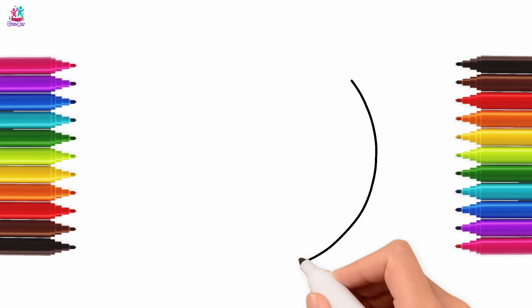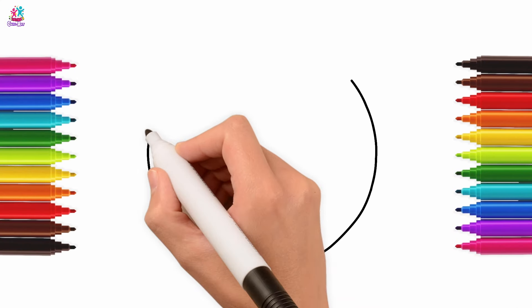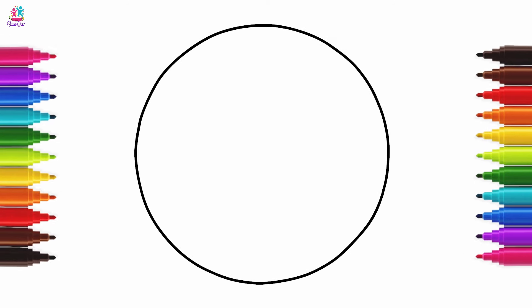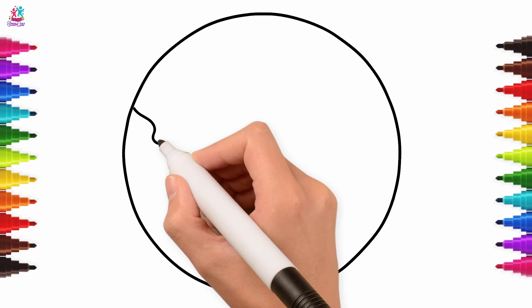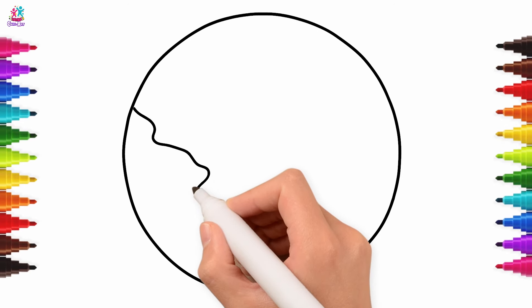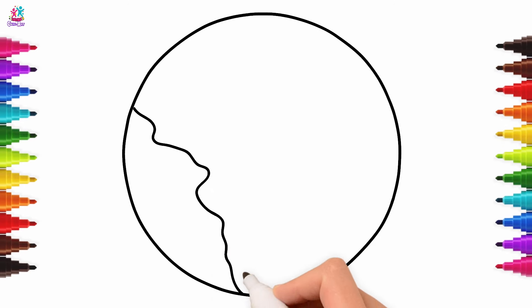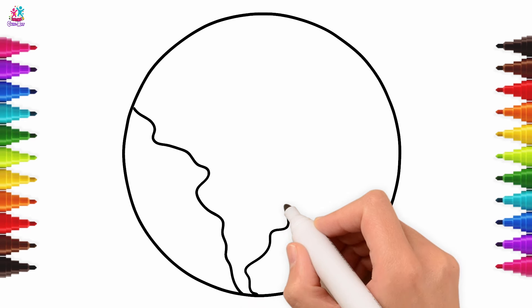Hey kids, today we're going to draw the planet Earth. Start by drawing a big circle and then some squiggly lines to map out your land space.